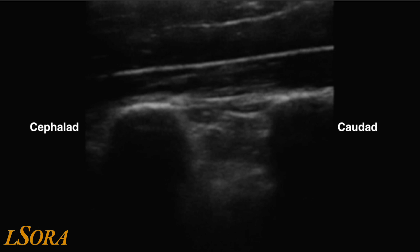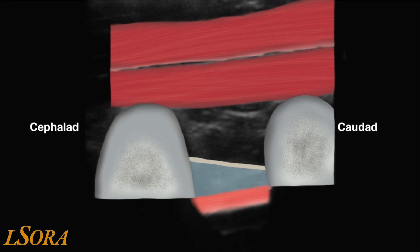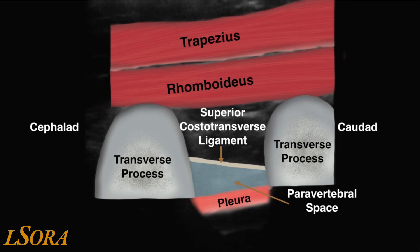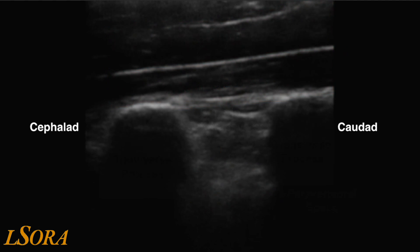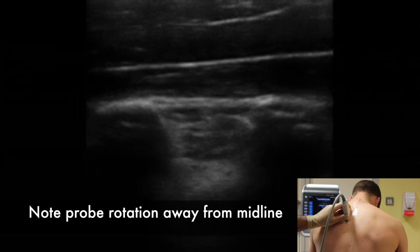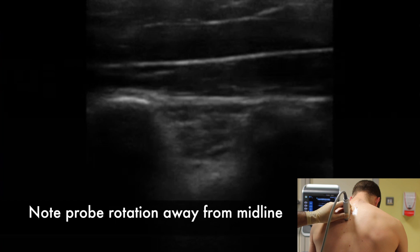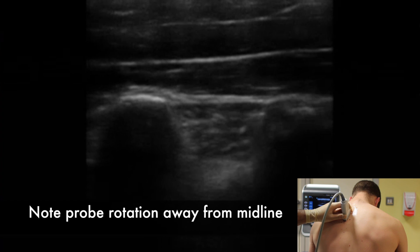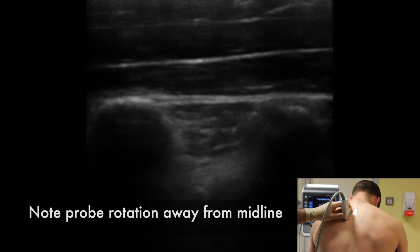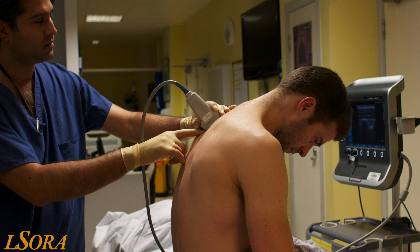With the probe held truly paramedian over the transverse processes, you can see the superior costo-transverse ligament and the paravertebral space below it. The pleura has been highlighted here for ease of identification, although with the true paramedian orientation it may not be identifiable. In order to clearly identify the pleura, the beam of the ultrasound probe needs to be directed laterally. In some patients, to facilitate in-plane needling, the caudad part of the probe needs to be rotated away from the midline so that it is scanning over the rib in order to facilitate in-plane needling.